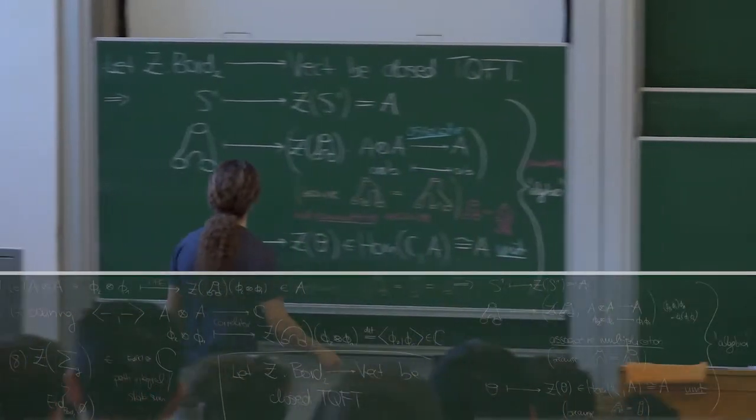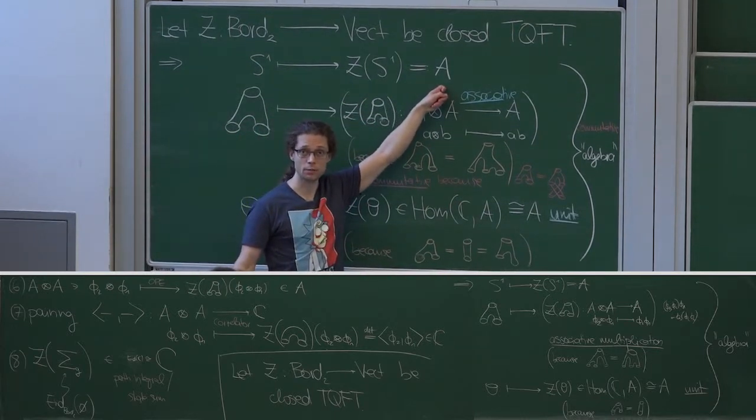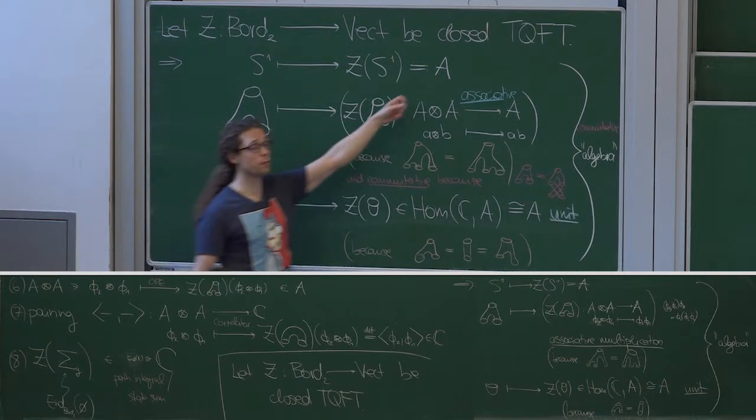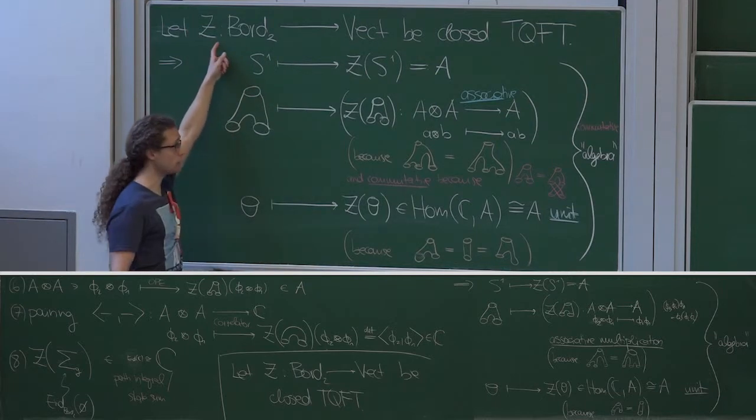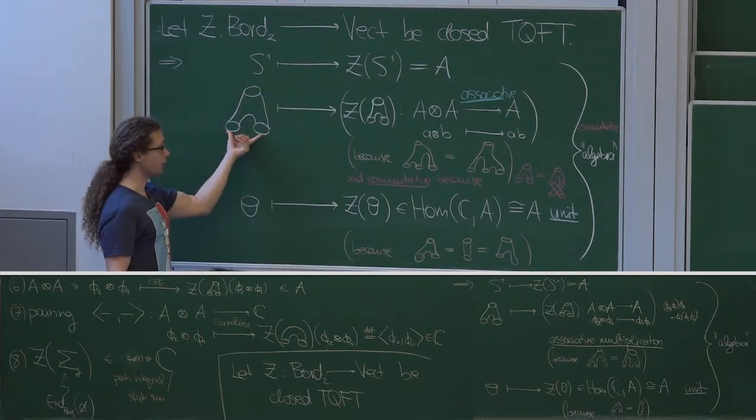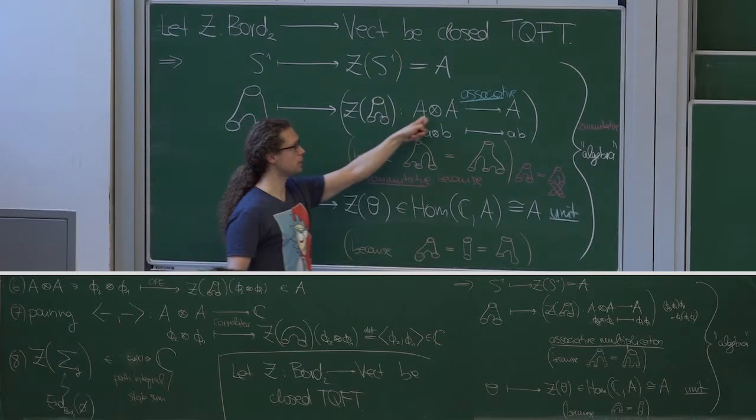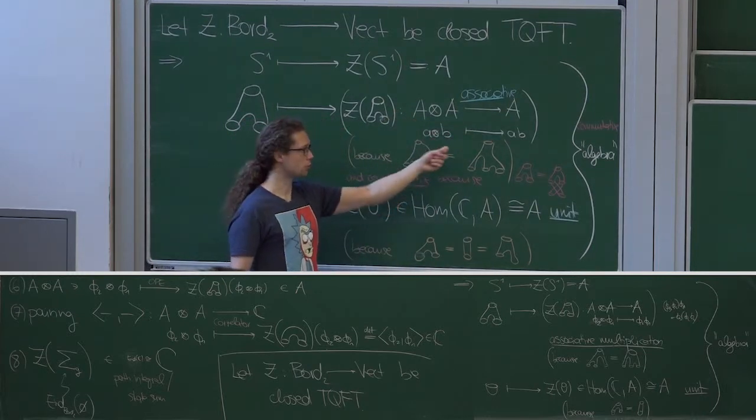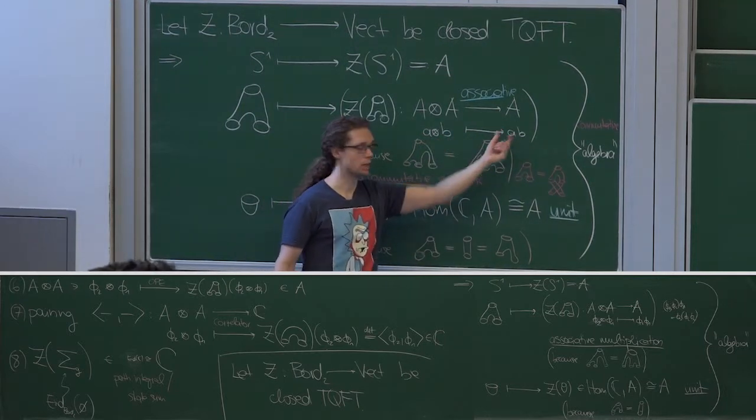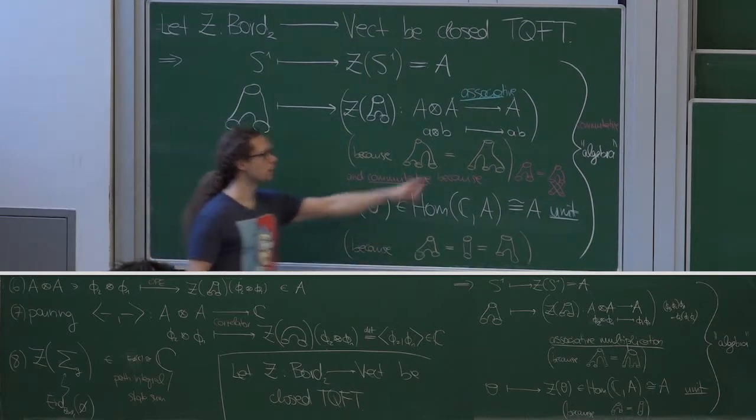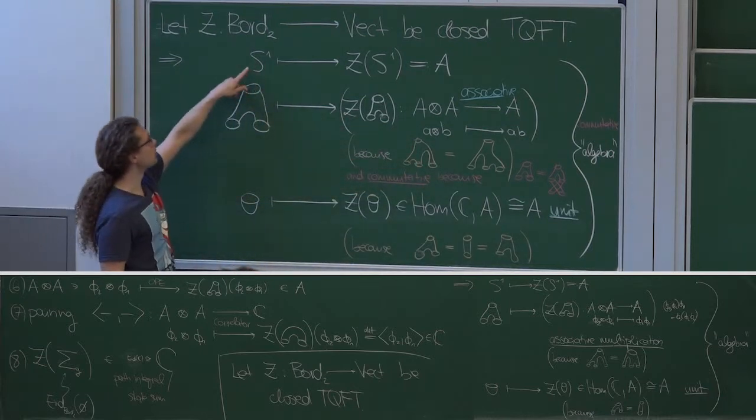So towards the end yesterday, we saw that if we have such a functor, it associates to a circle a vector space that I want to call A. To M circles, we will get the M-fold tensor product of A with itself, because the functor is monoidal. So this is a linear map from A tensor A to A, which I denote just by concatenating elements.